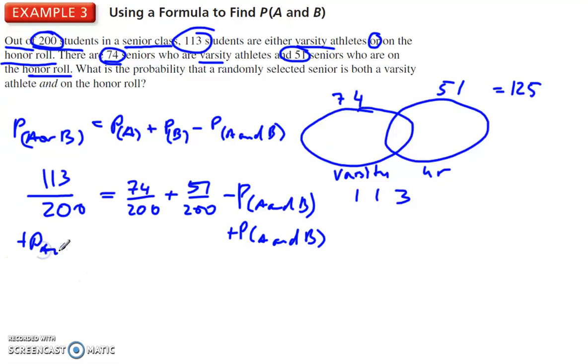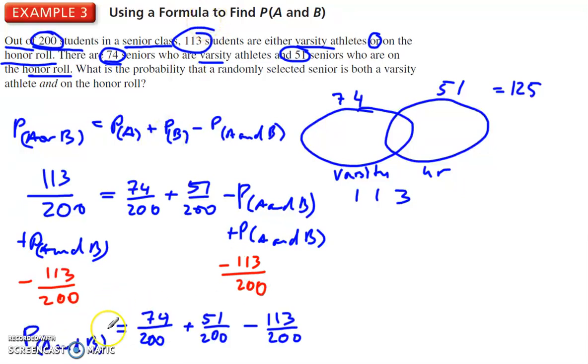And then I'm going to subtract the 113 over 200. Subtract 113 over 200. Alright, then I get this statement. Probability of A and B is 74 over 200 plus 51 over 200 minus 113 over 200. And that comes out to being 12 over 200. Okay, now we can simplify that down. That's 6 over 100 or 3 over 50. So the probability is 3 over 50 or divide that and you get 0.06 or 6%.